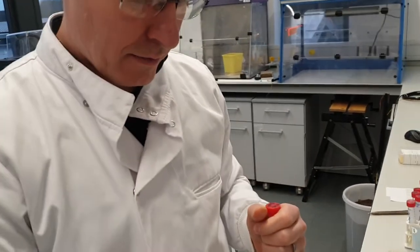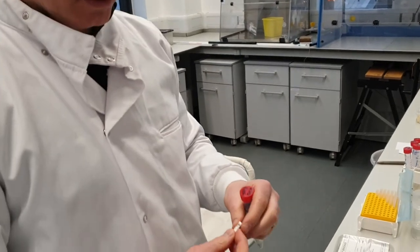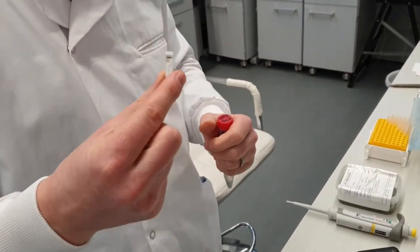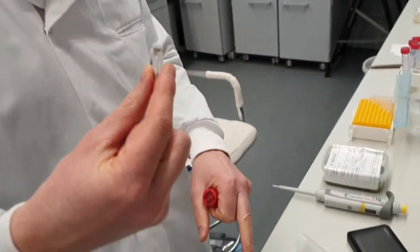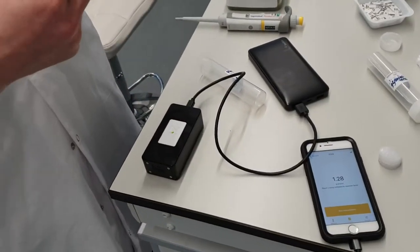So what we have is the FoodSense. The FoodSense has three main parts: it has the sensor, it has the meter, and it has the app.